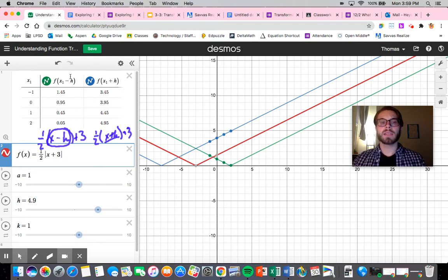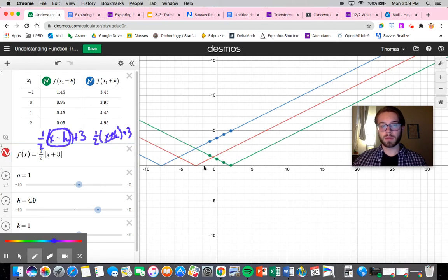If I subtract h, look what happens. It goes to the right. So if I subtract h from inside, this is a horizontal shift to the right. If I add h on the inside, it's a horizontal shift to the left. So that's all that's happened here. I've gone this way, went to the right, and that's when I've gone to the left.